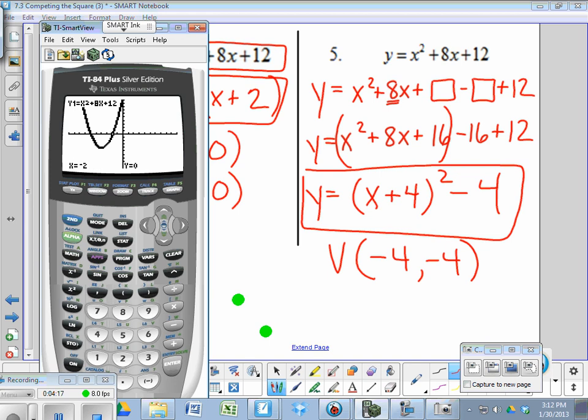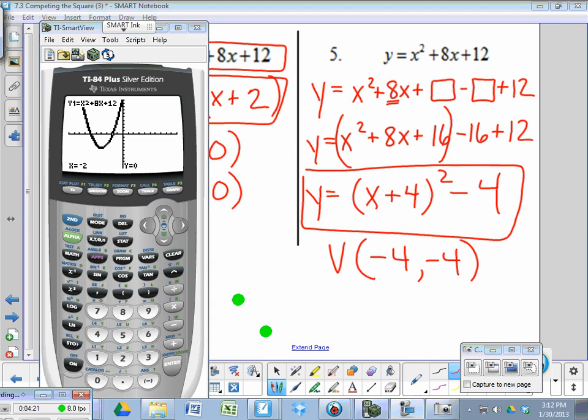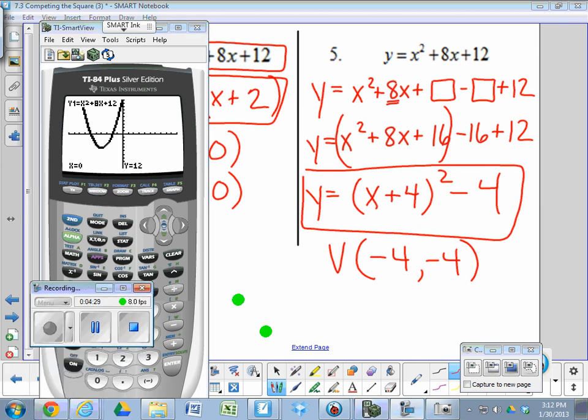The last thing you might want to do is to confirm the y-intercept by tracing to 0 and hitting enter. And it confirms that it's 0, 12. So that was the purpose of the video, to show you how to convert from general to vertex, general to factored, and then to confirm all of these things using your graphing calculator.